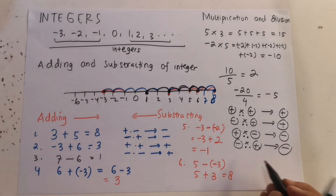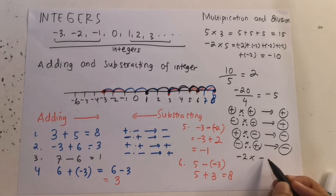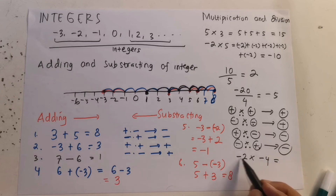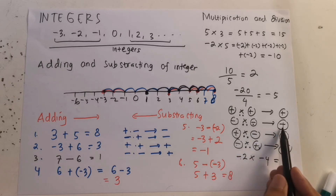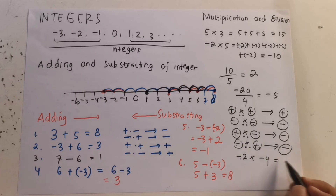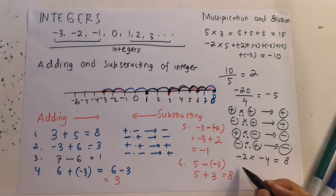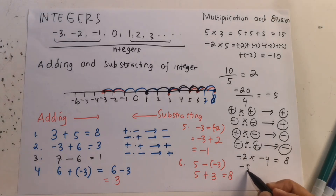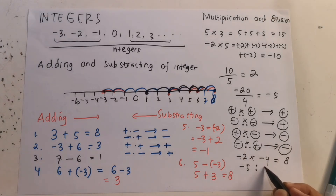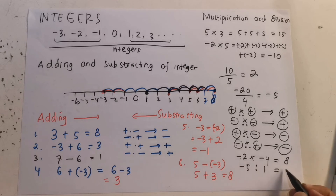For example 1: negative 2 times negative 4. This is negative times negative, so the answer is positive. The answer is positive 8. Then, negative 5 divided by 1: negative divided by positive — different sign — so the answer is negative 5.